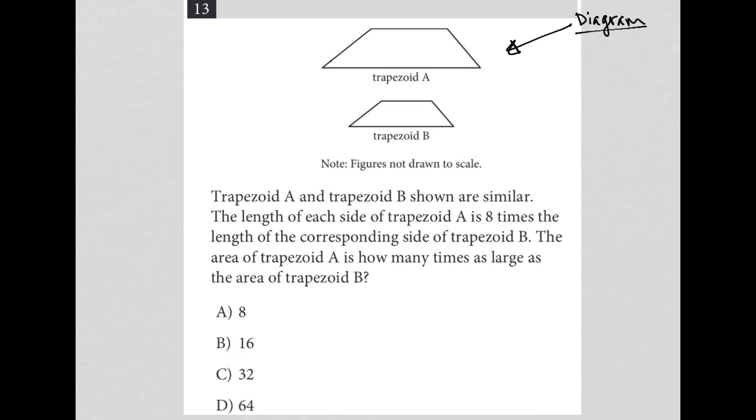Hopefully you remember that similarity between geometrical figures just means that each of the corresponding angles are congruent. So that also works for these right angles as well, or the angles on the right side, I should say. The next sentence says the length of each side of trapezoid A is eight times the length of the corresponding side of trapezoid B.